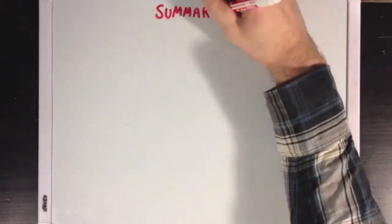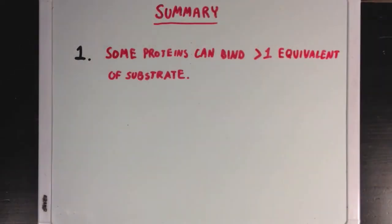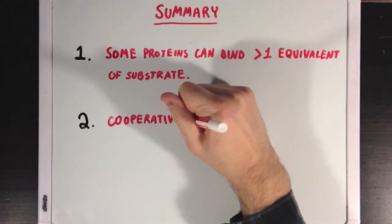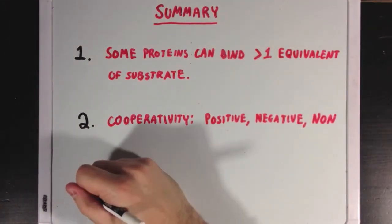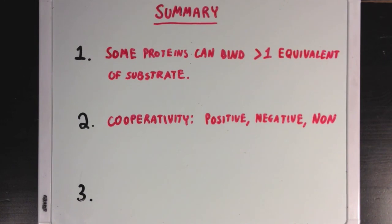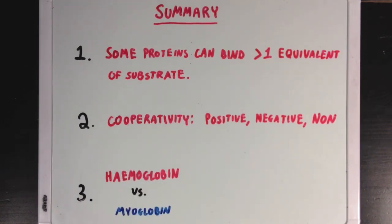So, what did we learn? First, we learned that some proteins can bind more than one equivalent of substrate. Next, we learned that there are three different types of cooperativity: positive, negative, and non-cooperative. Finally, we learned about proteins that exhibit two different types of cooperativity, which are the oxygen-binding molecules hemoglobin and myoglobin.